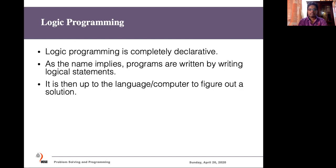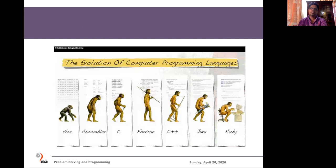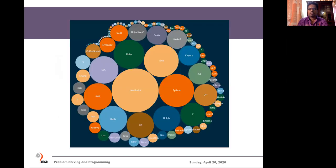When you think about the evolution of computer programming languages, it starts from machine code to assembler, and then C, Fortran, C++, Java, Scala, Ruby, and now thousands of programming languages exist in the world. Among them, at present the most popular programming language seems to be JavaScript because of web development — most websites and web applications, both back end and front end, are now most often developed using JavaScript.